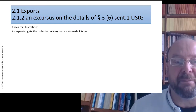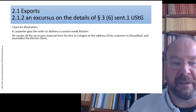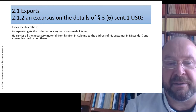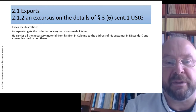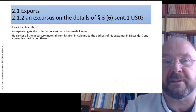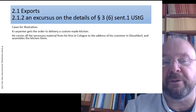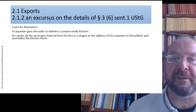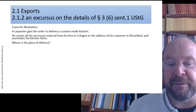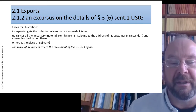For example, a carpenter gets the order to deliver a custom-made kitchen. You can imagine this carpenter starts in the morning with all the necessary material on his van and drives from his firm in Cologne to the address of the customer in Düsseldorf and assembles the kitchen there. Now, where is the place of delivery? You all saw him beginning to drive from Cologne to Düsseldorf. However, the place of delivery is where the movement of the good in question begins.